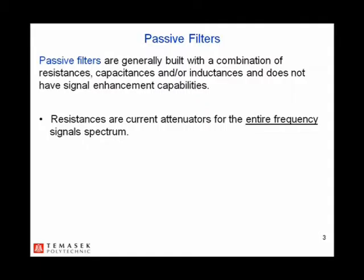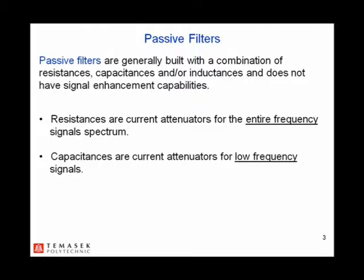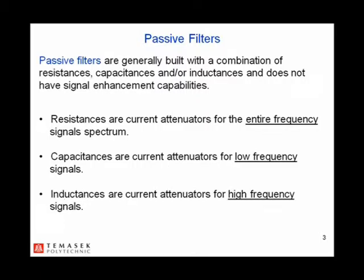Resistances are current attenuators for the entire frequency signal spectrum. Capacitances are current attenuators for low frequency signals. High frequency signals are allowed to pass through a capacitor with low reactance. Inductances are current attenuators for high frequency signals. Low frequency signals are allowed to pass through an inductor with low reactance.